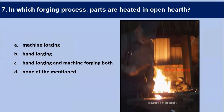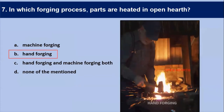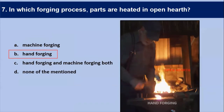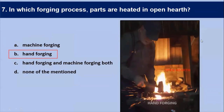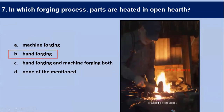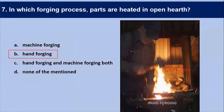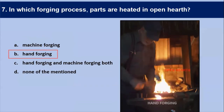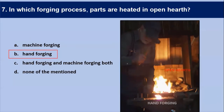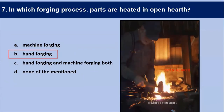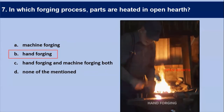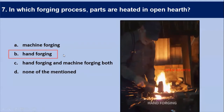In which forging process are parts heated in an open hearth? As shown in the diagram, this is the open hearth and we are going for hand forging. In hand forging, parts are heated in an open hearth because it is done in a smithy job manually, and shaping is carried out with hand tools. The answer is hand forging.